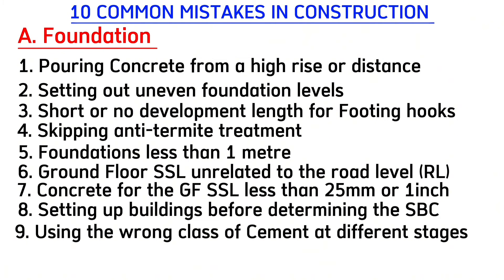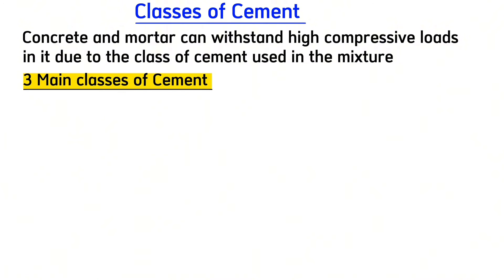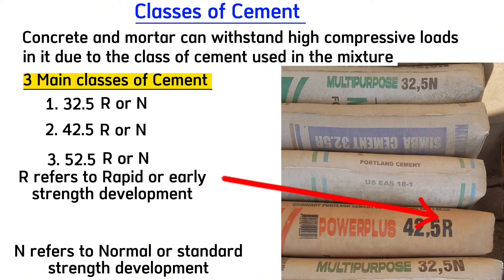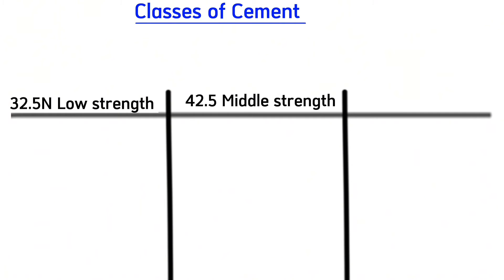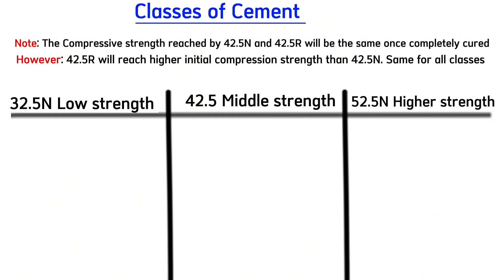Common mistake number nine is using the wrong class of cement at different stages in construction. Concrete and mortar can withstand high compressive loads due to the class of cement used in the mixture. There are three main strength classes: 32.5, 42.5, and 52.5, followed by R or N — where R refers to rapid or early strength development and N refers to normal or standard strength development. While 32.5 is low strength, 42.5 is middle strength, and 52.5 is higher strength. The compressive strength reached by 42.5 N and 42.5 R will be the same once completely cured; however, 42.5 R will reach a higher initial compressive strength.